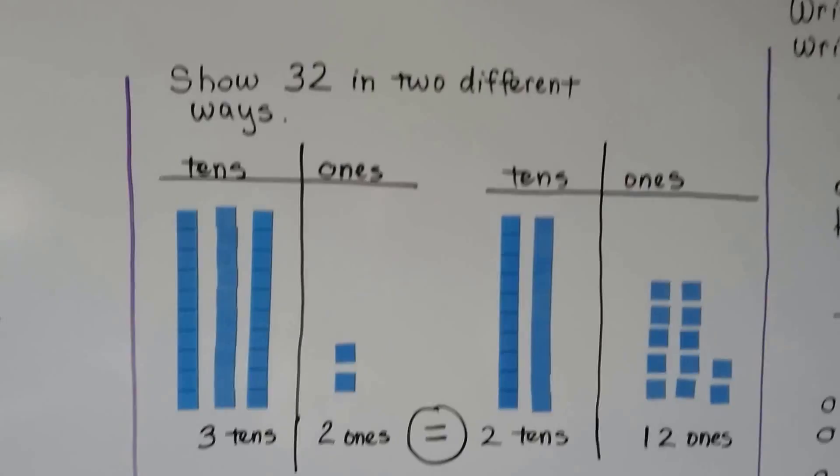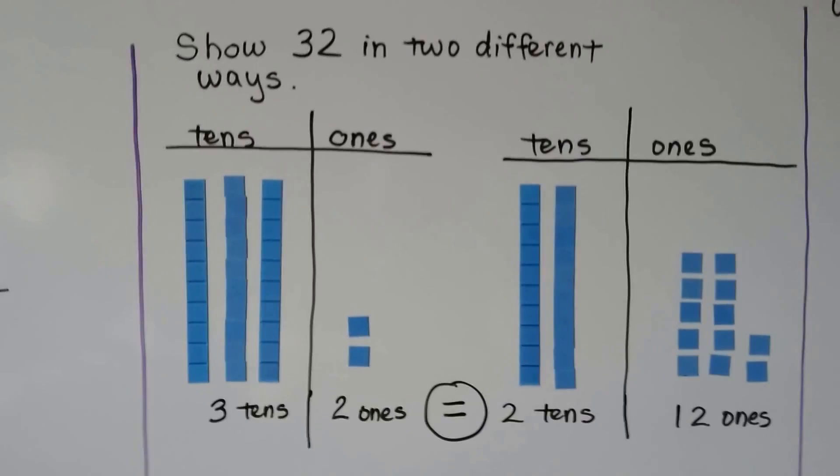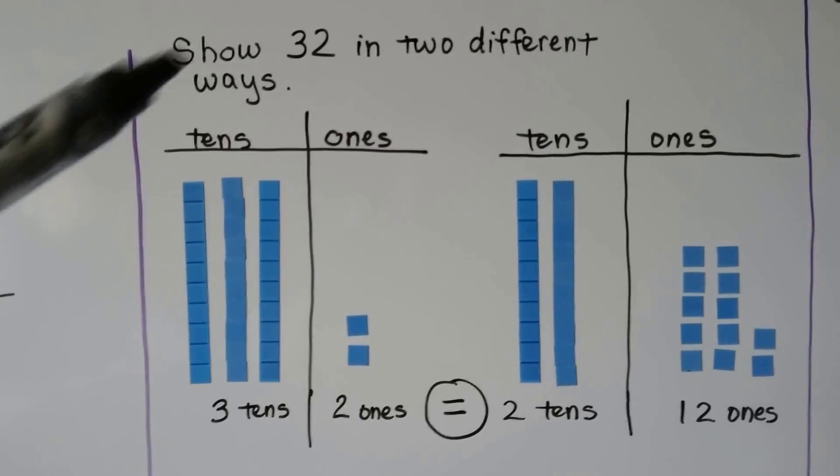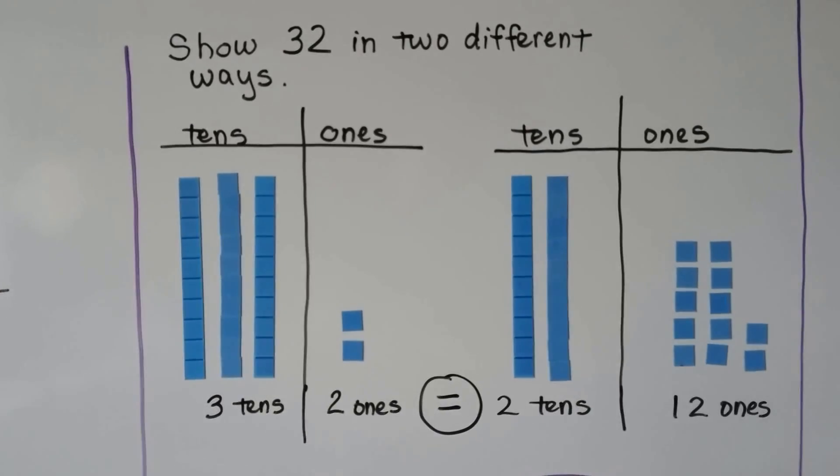We can show 32 in two different ways. We can show it as 3 tens and 2 ones, just like it's written, 3 tens and 2 ones.